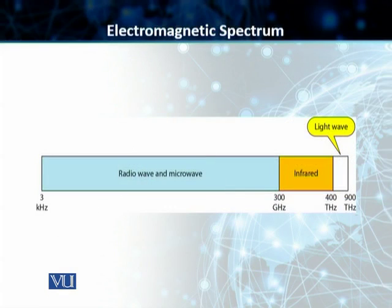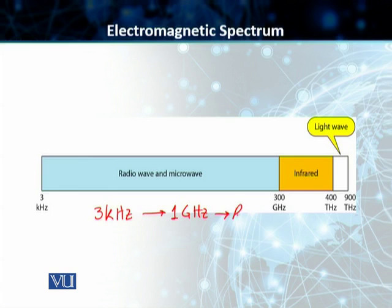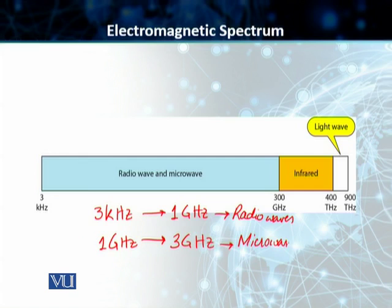You have seen this particular slide before. As I told you, 300 kHz to 300 GHz — there is no particular separation — but please note that normally 3 kHz to 1 GHz is our radio waves, and then 1 GHz to approximately 3 GHz is our microwaves. The radio wave band is relatively narrower.